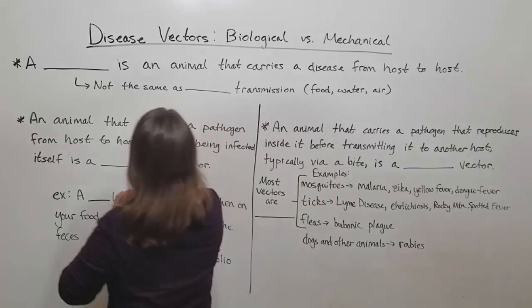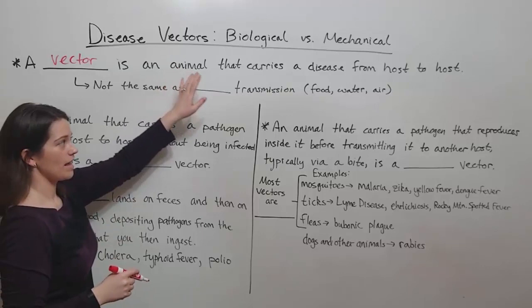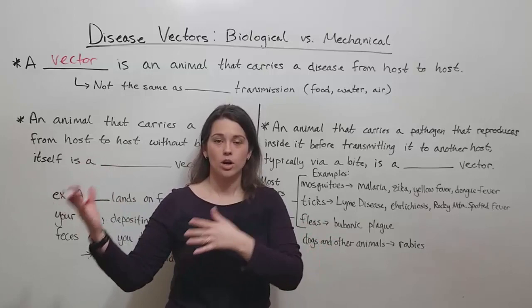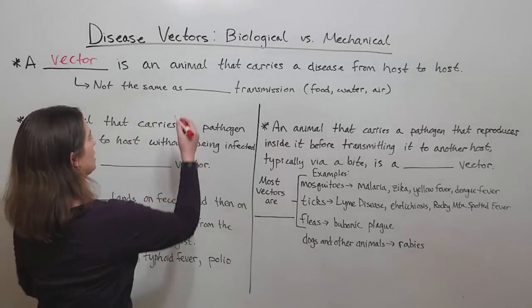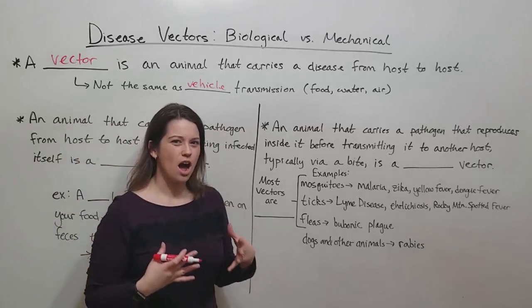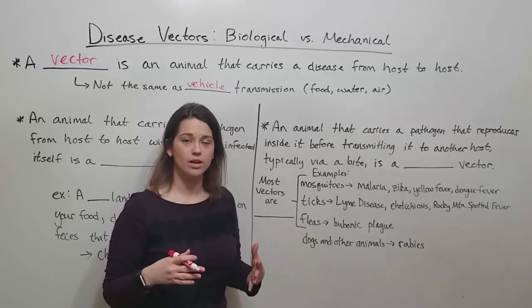A vector is an animal that carries a disease from host to host, so carries a pathogen from one host to the next host. Please do not confuse this with vehicle transmission — they are not the same. Vehicle transmission is when something non-living like food, water, or air takes a pathogen from one host to another. We're talking about vectors, we're talking about living animals.